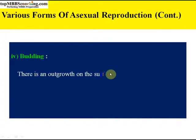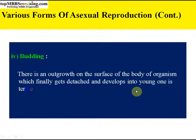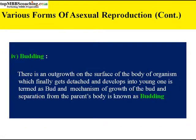Next is budding. In budding, there is an outgrowth on the surface of the body of the organism which finally gets detached and develops into a young one — this is termed a bud. The mechanism of growth of the bud and separation from the parent's body is known as budding. One or more outgrowths called buds are formed on the parental body, and each bud consists of a small group of cells surrounded by epithelium.